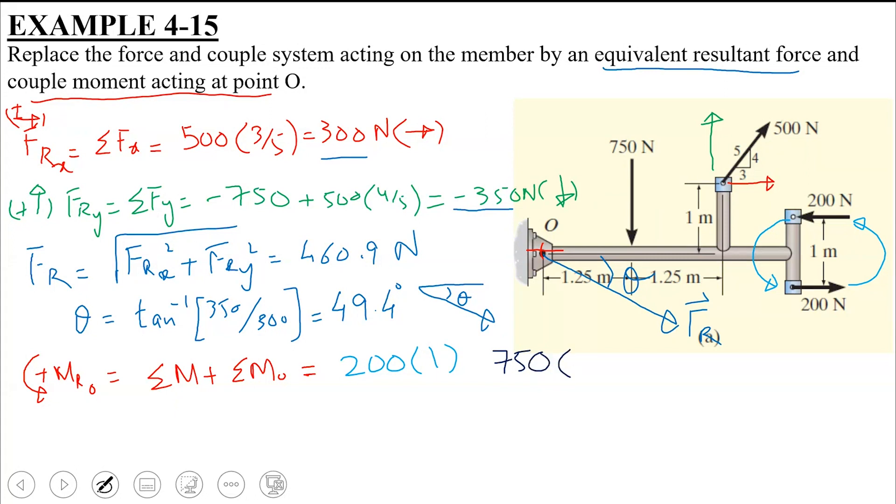For perpendicular distance about point O, how much is it? For 750. Sir, 1.25. 1.25. 1.25. And if I look at this direction, what direction is the moment about point O? Clockwise. Clockwise. So I'm going to include a negative sign here.